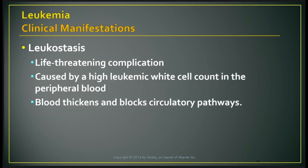Leukocytosis is a life-threatening complication caused by high leukemic white cell count in the peripheral blood, which thickens the blood and can block circulatory pathways. Leukemic white cell count greater than 100,000 in the peripheral blood is a red flag — this is not something seen normally with infections.